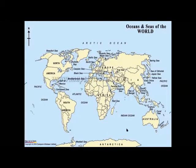So we have five oceans, and so many seas are also present. Like we have the Bay of Bengal, South China Sea, Philippine Sea, Mediterranean Sea, Black Sea, Caspian Sea — so many seas are present in different oceans.